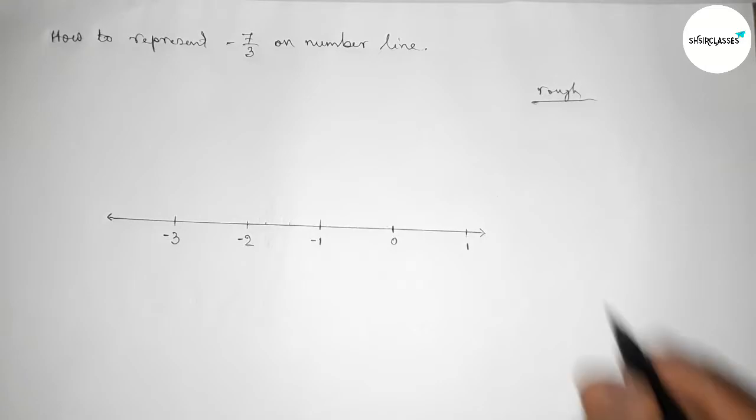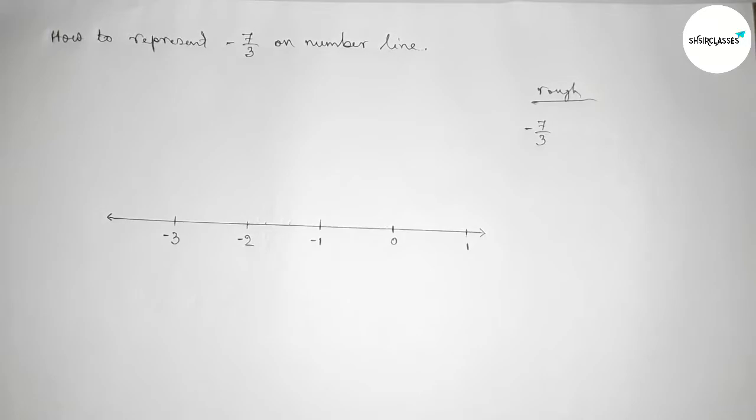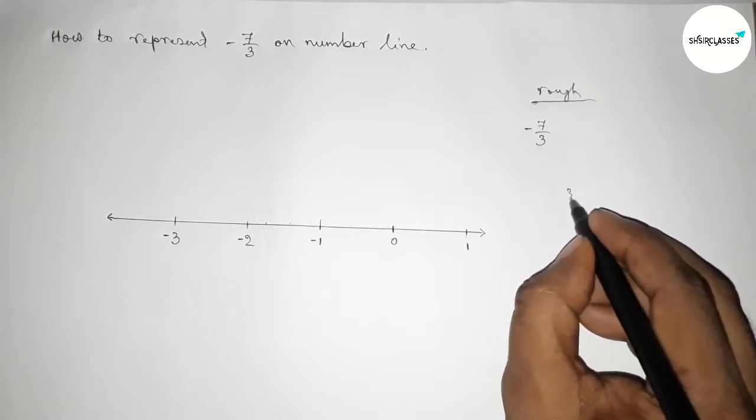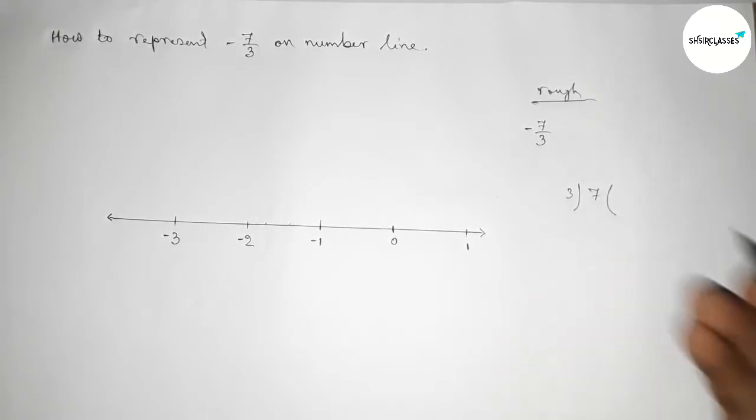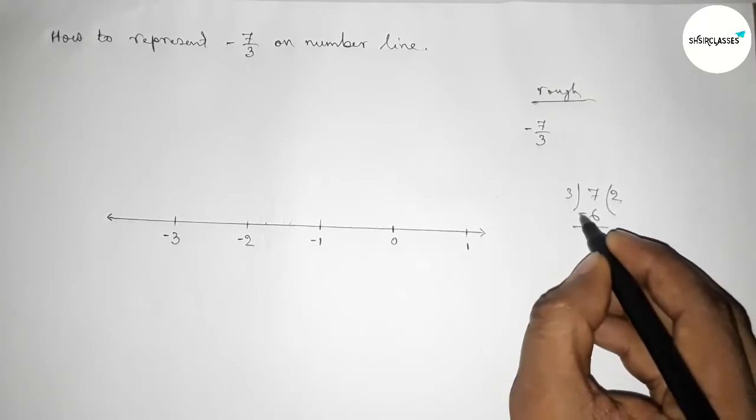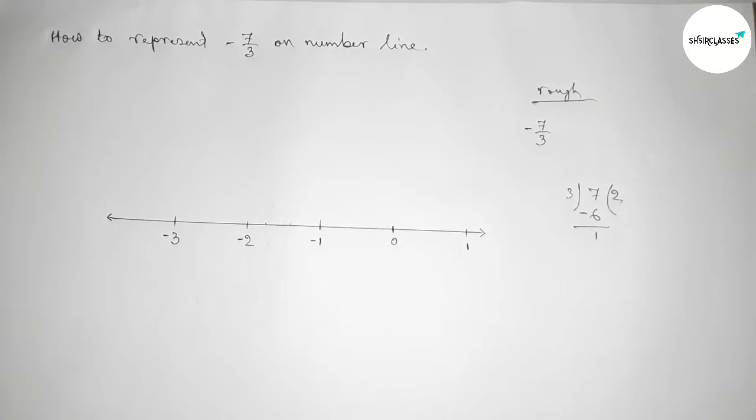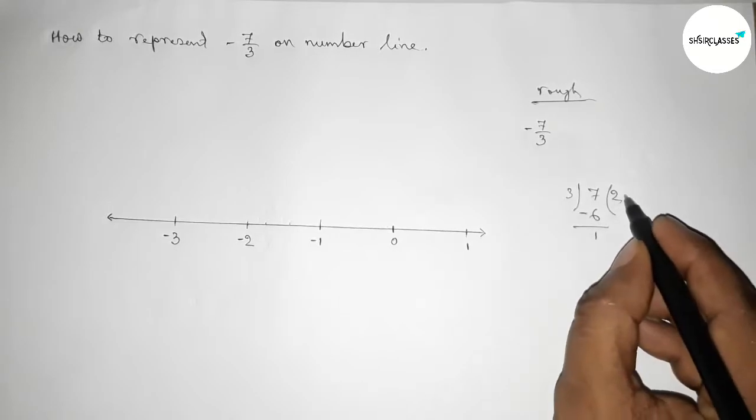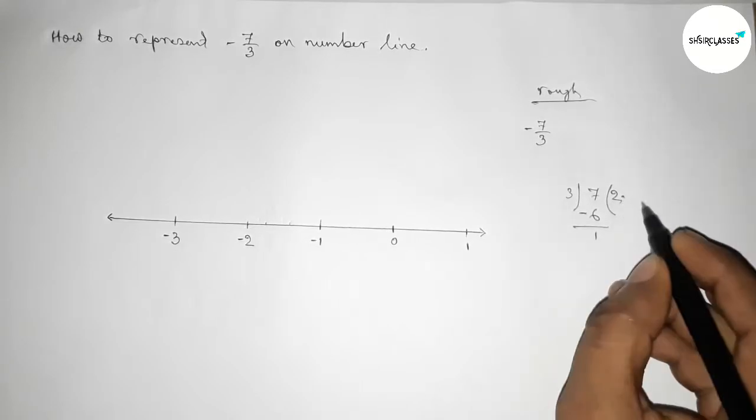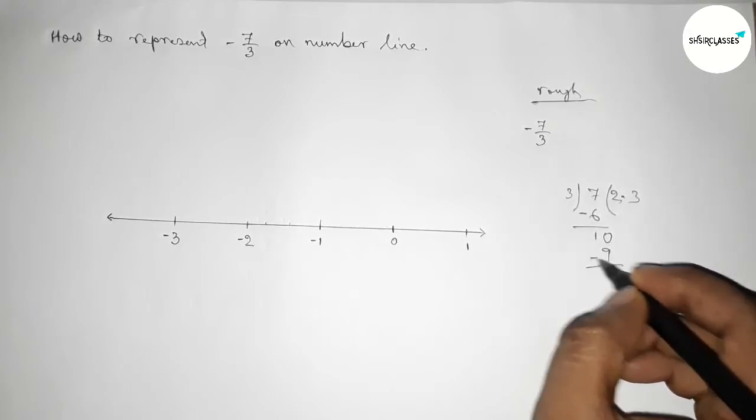The fraction is -7/3. To find the value, divide 7 by 3. Three into 7 goes 2, subtract 6 to get 1. Continuing the division with the decimal point, we get 3, 3, 3...